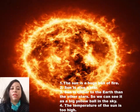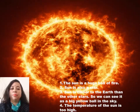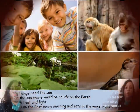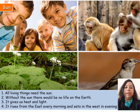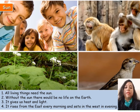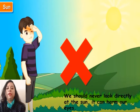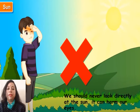The temperature of the sun is too high. All living things need the sun. Without the sun, there would be no life on the earth. It gives us heat and light. It rises from the east every morning and sets in the west every evening. We should not look directly at the sun — it can harm our eyes.